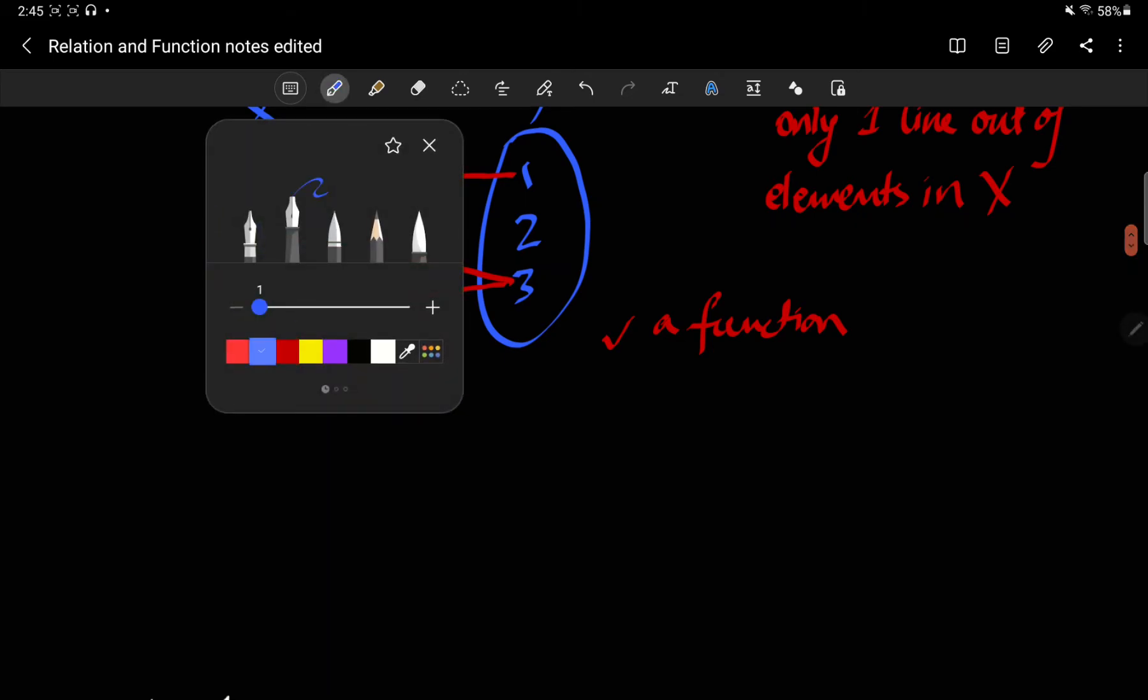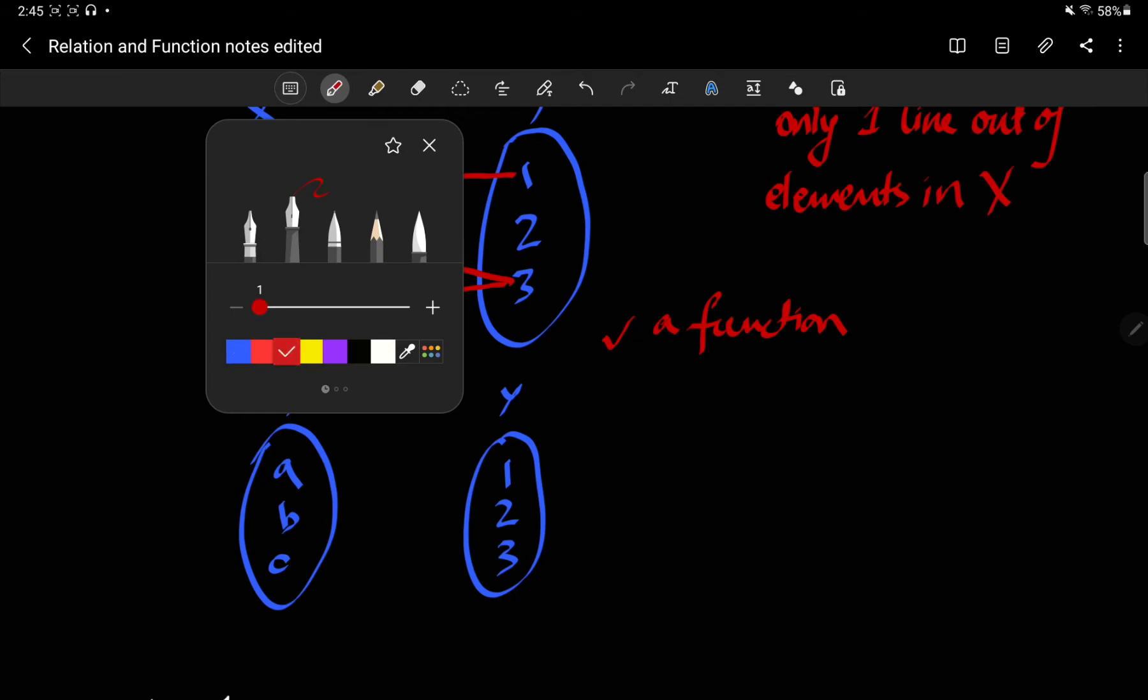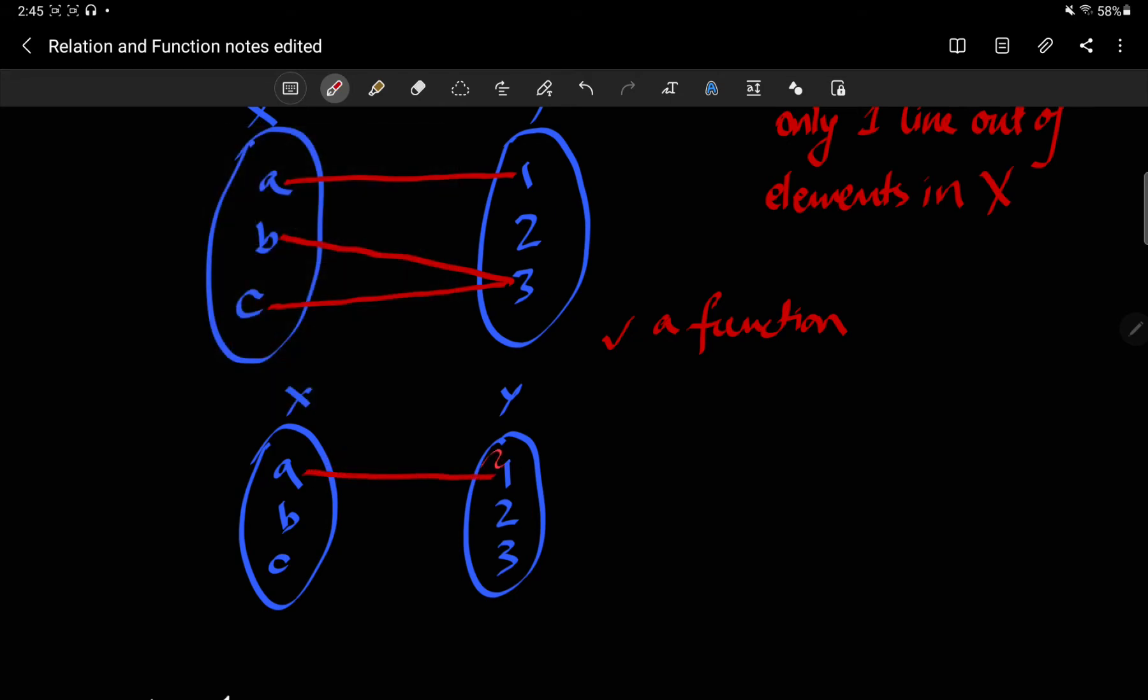Now, let's look at a non-example. Let's say I have a, b, c. I have one, two, three. And my mapping looks like a goes to one, b goes to two, c goes to three, but then b goes to three, two. This is not a function.